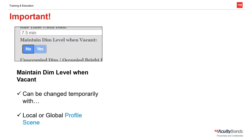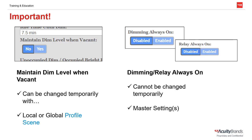Now that we've learned the functions of these settings, let's discuss one more major difference between them. Maintain Dim Level When Vacant can be changed temporarily through the use of a local or global profile scene, meaning the device behavior can change throughout the day or on demand with a button press. Conversely, Dimming Always On and Relay Always On are master settings of the device; therefore they cannot be changed temporarily. They can only be changed through Sensor View and will remain until changed in the default settings tab.